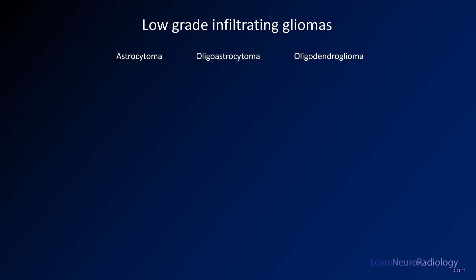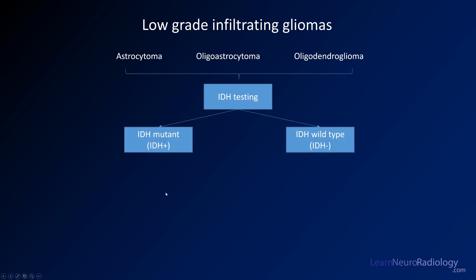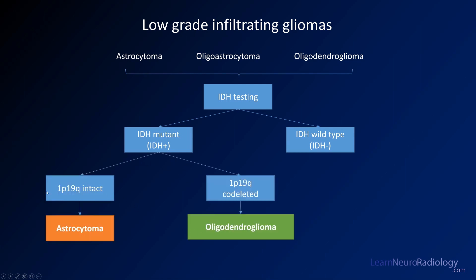Let's talk about how low-grade tumors are classified. If you have a likely low-grade glioma, you first perform IDH testing. For IDH-mutant tumors, you then check whether 1p19q is intact or co-deleted. If intact, you're dealing with an astrocytoma; if co-deleted, it's an oligodendroglioma. The defining features of an oligodendroglioma are therefore IDH mutation and 1p19q co-deletion. If the tumor is IDH wild-type, you're dealing with other non-specified tumors.